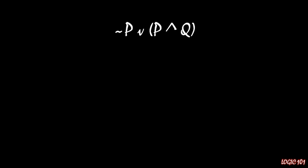We have a compound sentence that looks like that, not P or P and Q. And again, we might be curious when this statement is true and when this statement is false, based off of when P and Q are true or false. And so we need to construct a truth table to figure that out.